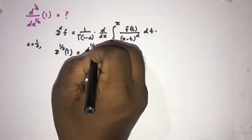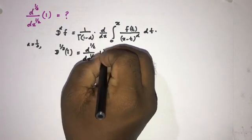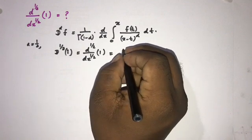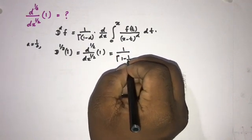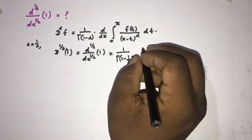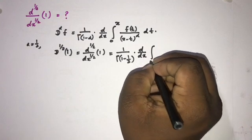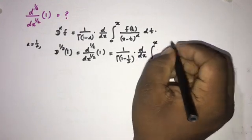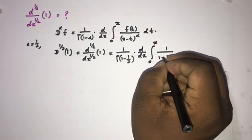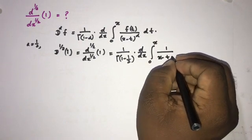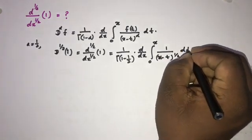is d 1 half over dx to the 1 half of 1 is equal to 1 over gamma of 1 minus alpha is equal to 1 half d by dx integral from 0 to x f of t. We know 1 over x minus t to the alpha is equal to 1 half d t.